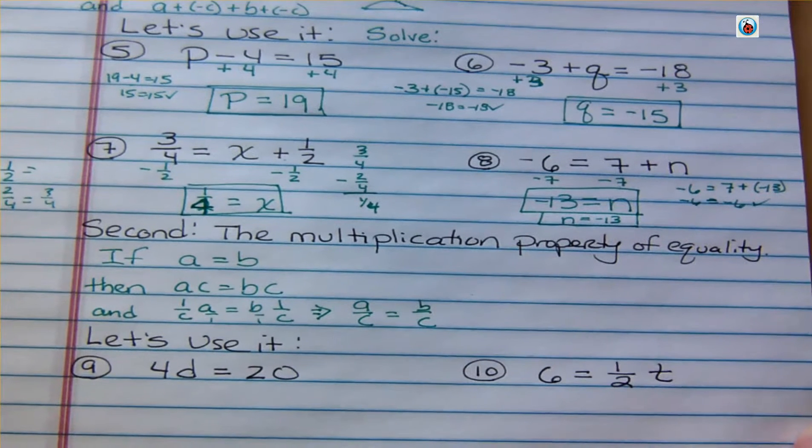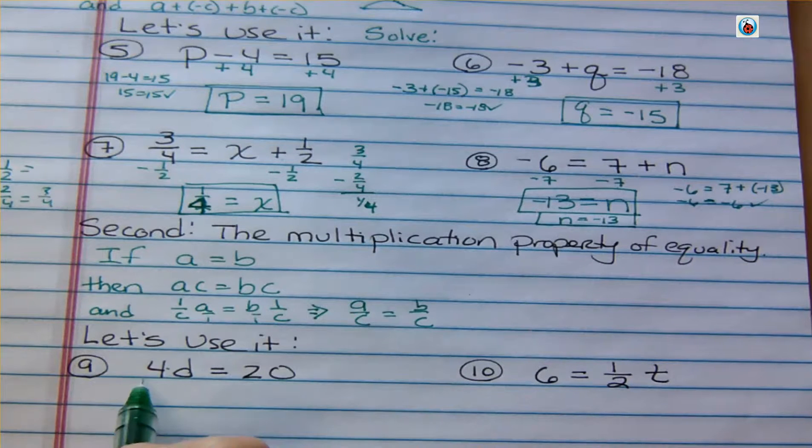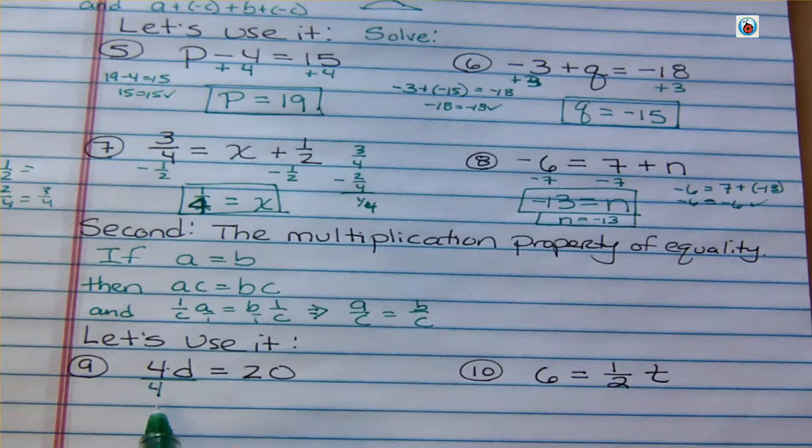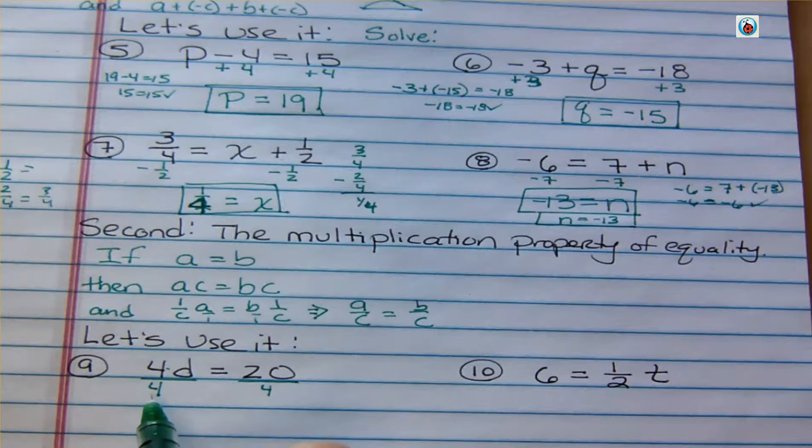And so what we're saying is if 4 times D equals 20, what's D? And the method we're going to use is the second part. Our coefficient is 4. We always want our coefficient to be 1, and so we want to divide something by itself because 4 over 4 is not 0. It cancels to 1, and 1D, we can just write D. We don't need to write that coefficient of 1.